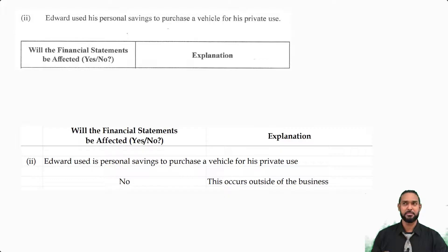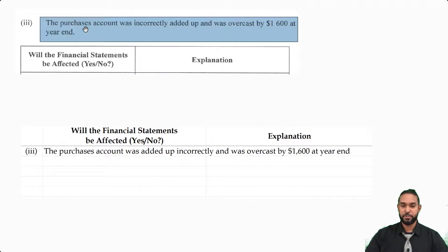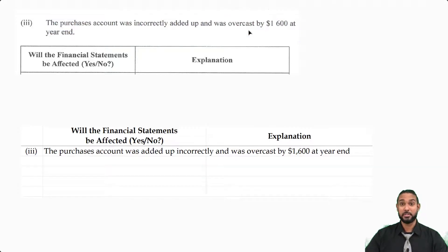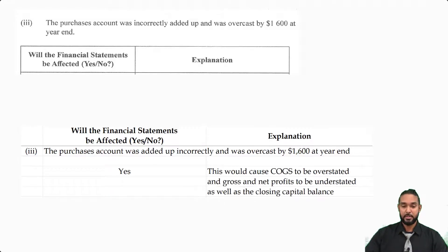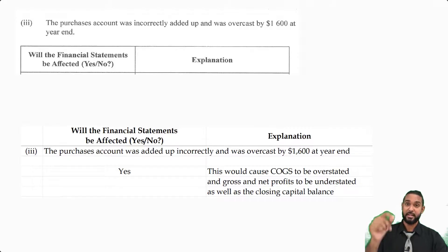The third transaction: the purchases account was incorrectly added up and was overcast by $1,600 at year end. Purchases is an expense, so if it's incorrectly added up and overcast it's going to affect cost of goods sold, gross profit, net profit, and ultimately capital. So yes, it's going to affect the financial statements because it would cause the cost of goods sold to be overstated and gross and net profits to be understated, as well as the closing capital balance.